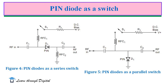Figure 5 shows the circuit for a shunt switch. In this case, the diode is placed across the signal line. When the diode is turned off, the resistance across the signal path is high, so operation of the circuit is unaffected. But when the diode is turned on (S1 is closed), a near short circuit is placed across the line. This circuit is turned off when the diode is forward biased, in contrast to the series switch in which a forward biased diode turns the circuit ON.